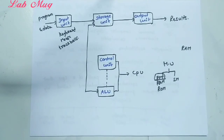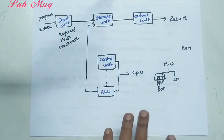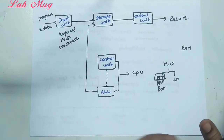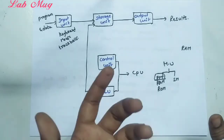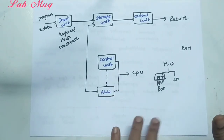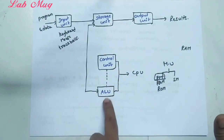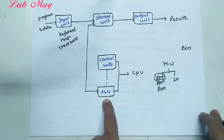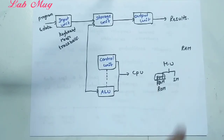ALU handles any arithmetic and logical operations — AND, OR, NOT — additions, subtractions, and any logical operations go to the ALU — the arithmetic and logical unit.